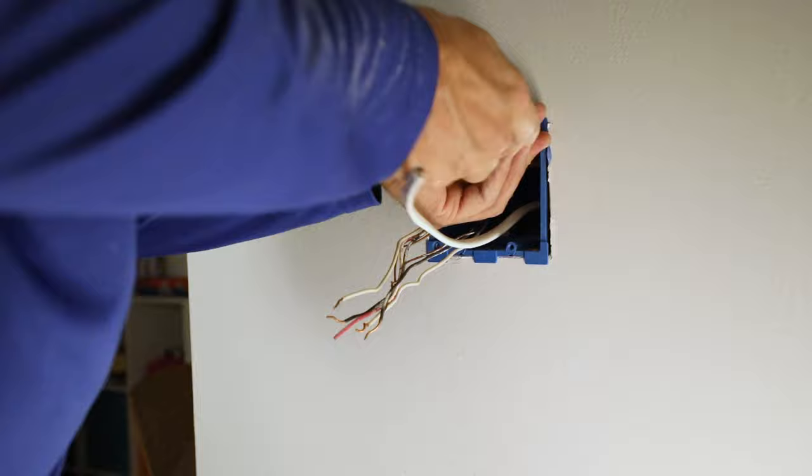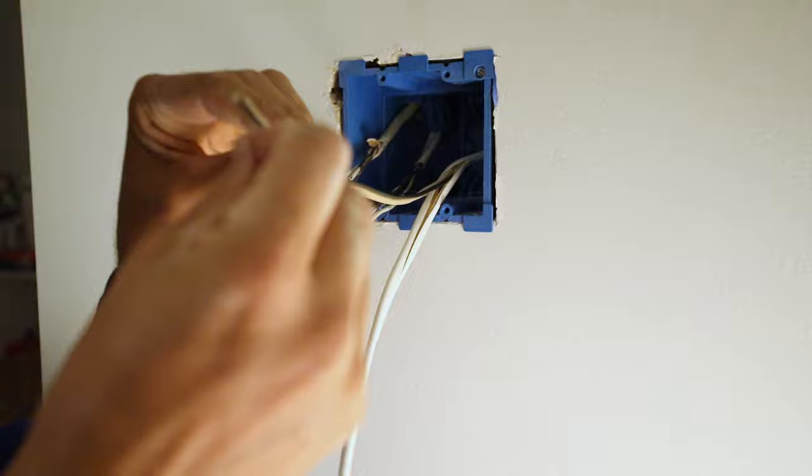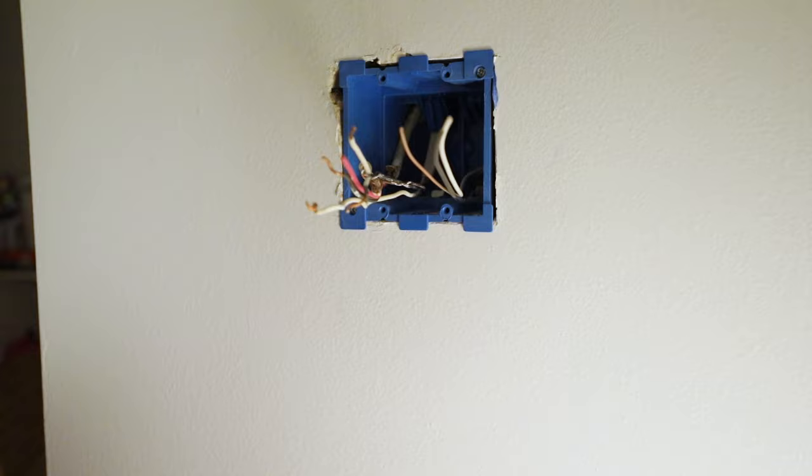And now I can strip the new wire. This is the wire coming from the light again, the new wire. I'm going to cut that to size, and then strip the white and black wires about three quarters of an inch back.